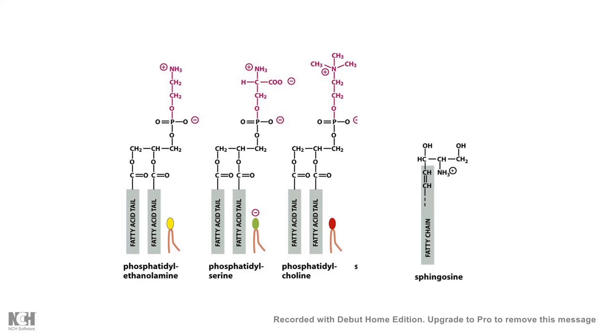Sometimes, instead of glycerol, another kind of alcohol is present which is called sphingosine, and the lipid containing that, the phospholipid containing sphingosine, is known as sphingomyelin. Sphingomyelin is also abundant phospholipid present in the membranes.